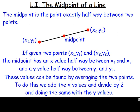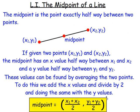If you do that, you end up with this formula here. The midpoint: you add the x's and then halve them to get the x coordinate, and for the y's you add them and halve them to get the y value.